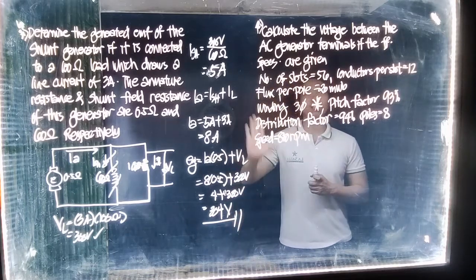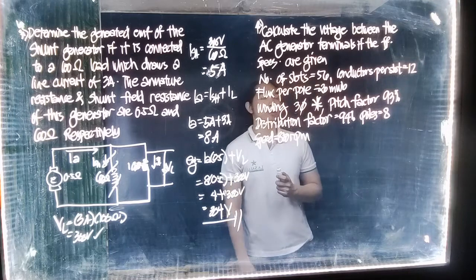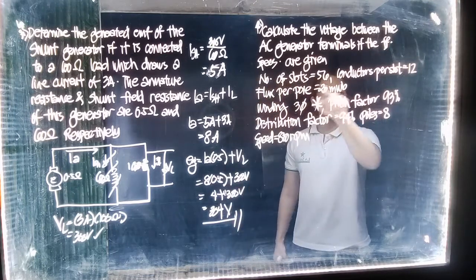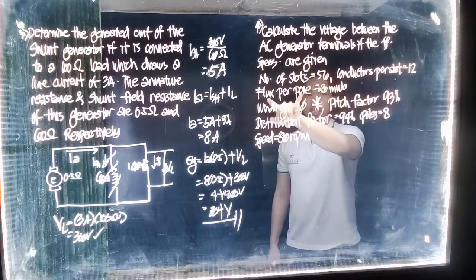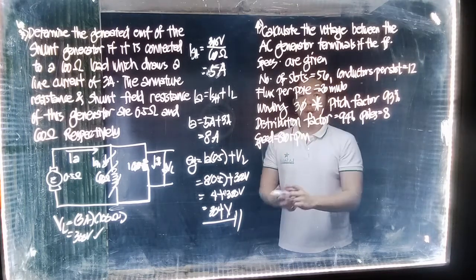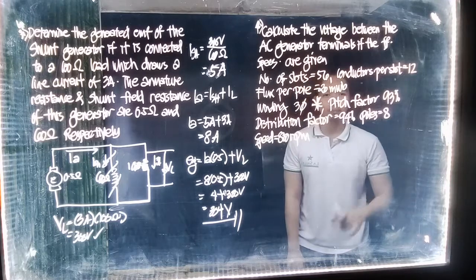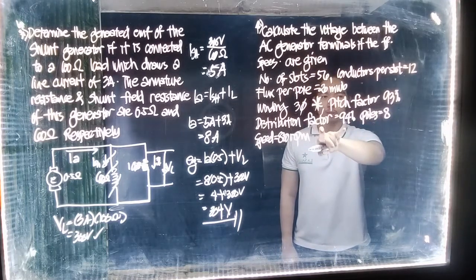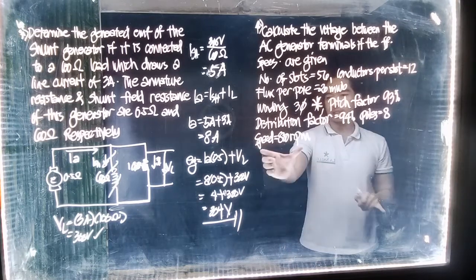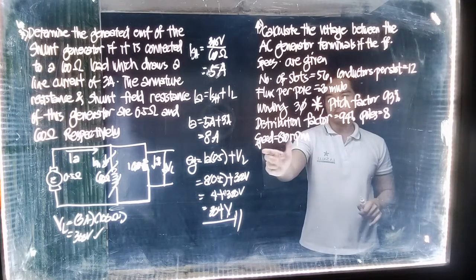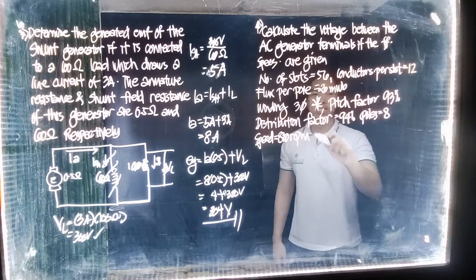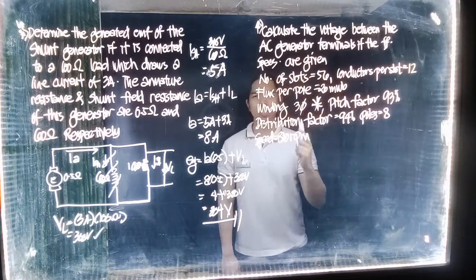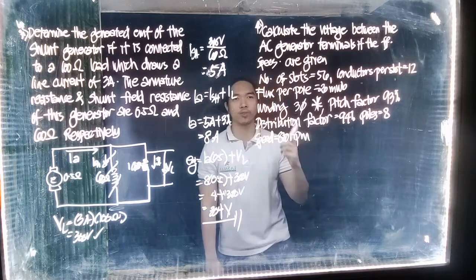We're asked to calculate the voltage between the AC generator terminals if the following specs are given. We have the number of slots, conductors per slot, flux per pole, winding topology in star or Y, pitch factor of 93%, distribution factor of 94%, 8 poles and a motor speed of 800 revs per minute. This is the speed of the prime mover.